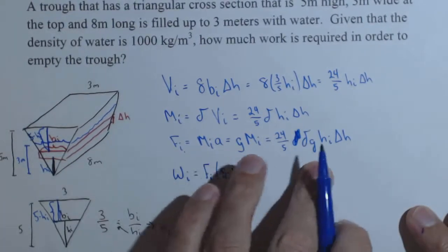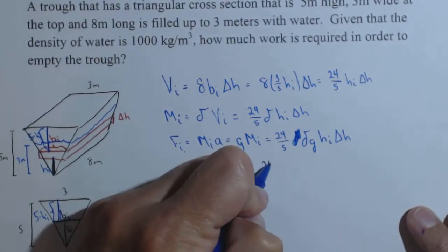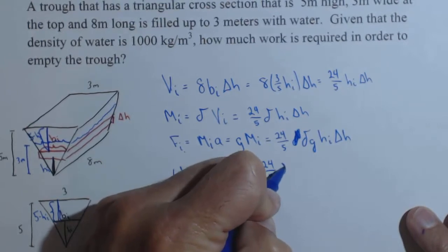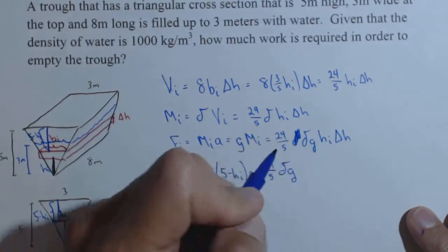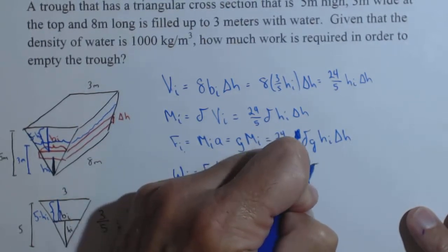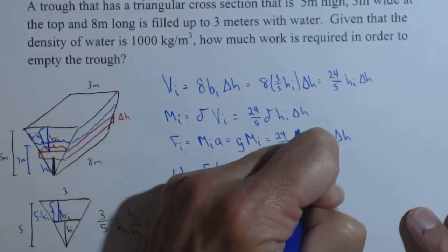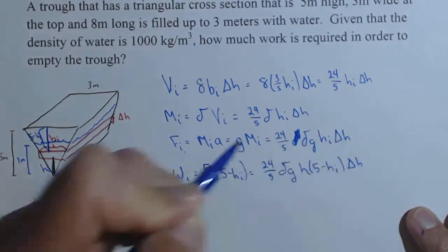And so, putting this all together, I'm going to put the constants out front. 24 fifths delta g, H times 5 minus H sub i, excuse me, we're still in the discrete case, delta H. We're ready for our integral.